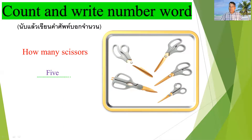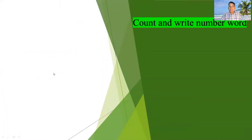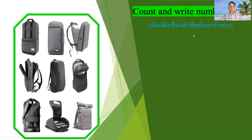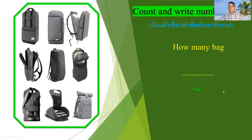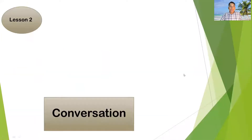In the picture you can count and then write the number word — both number and word. Next, count and write the number words: how many bags? You can see one, two, three, four, five, six, seven, eight, nine. So you write nine. Then we have a conversation section.